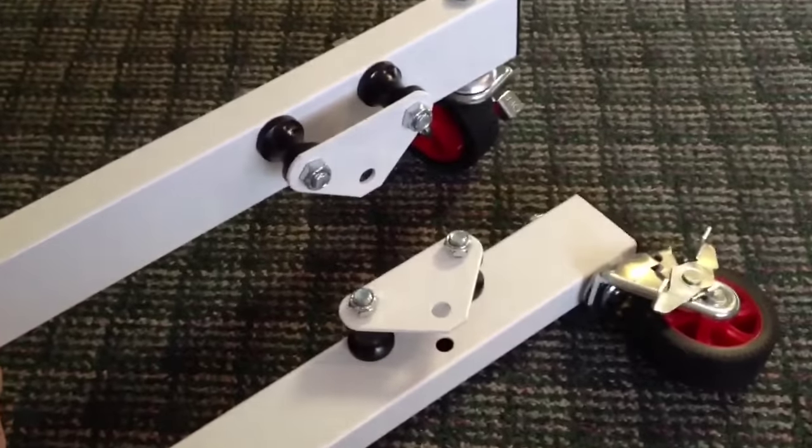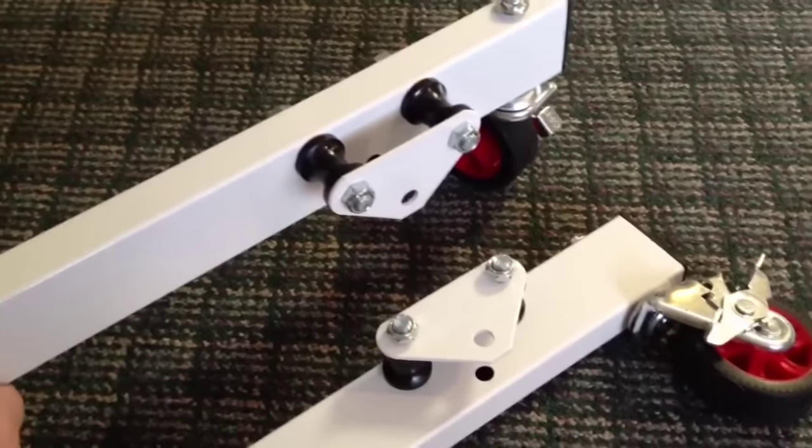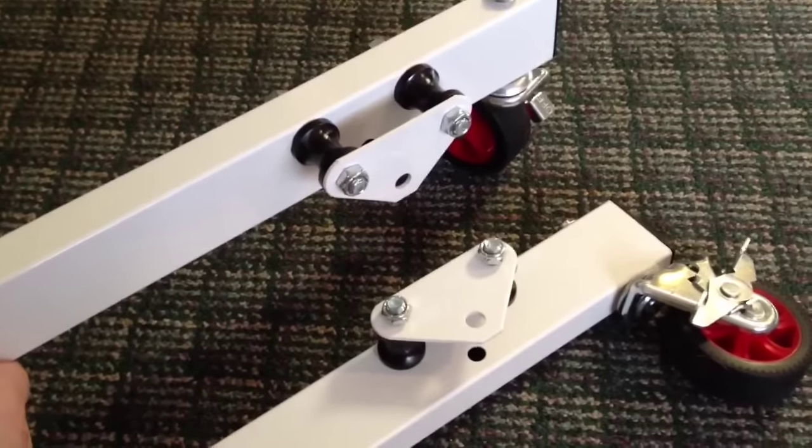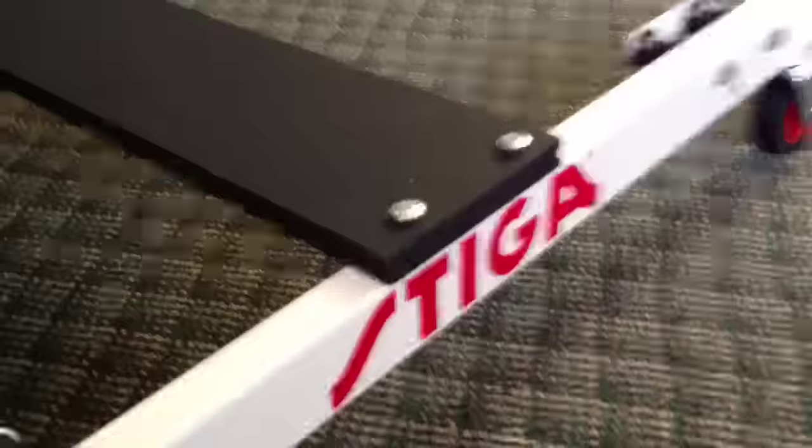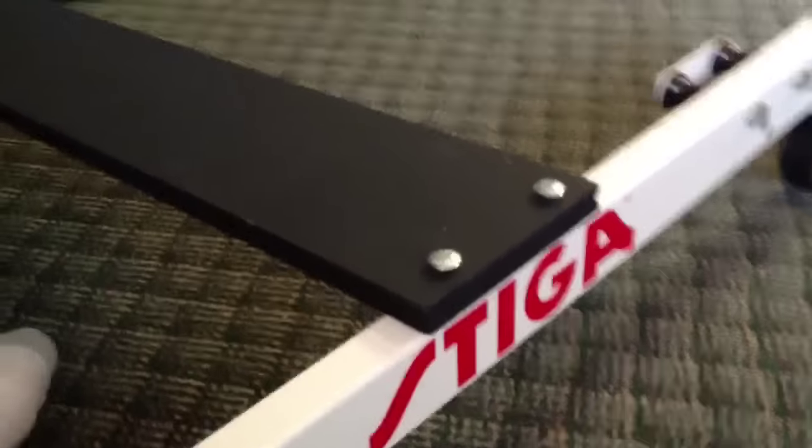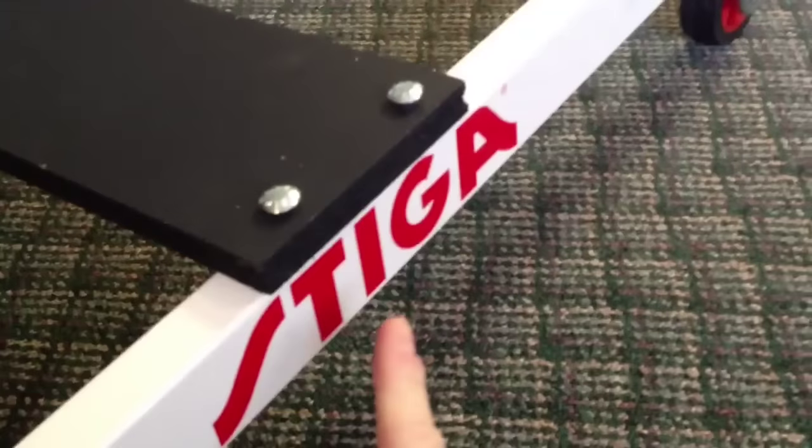Step two is done. Put on those plates and the spacers, hopefully correctly. Step three, putting the support board in. Make sure you've put the board in so the Stiga is on the outside and that the plates are on the inside.